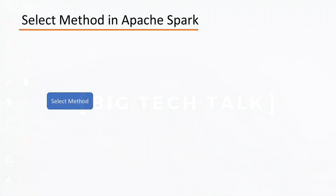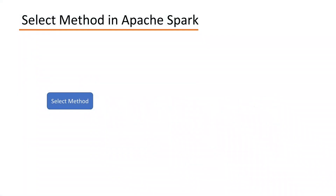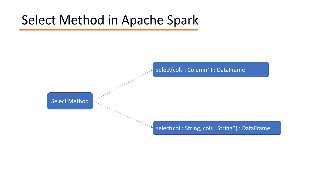SparkSelect is a transformation function that is used for selecting columns from a DataFrame and Dataset. The SELECT method takes two arguments of type either all string or all columns, but will not take a mix of both. If you pass a string and column type in a single select statement, you will get a compile time error. We can implement the SELECT method in broadly three different ways.